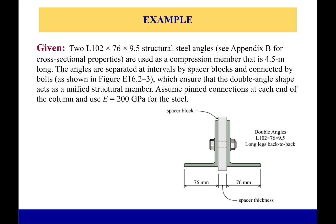Okay, let's try another example. This one is a little bit harder to visualize, so I'll read it and then we'll talk about it. I've got two L102 × 76 × 9.5 structural steel angles, shown in the picture right here, and they're used as a compression member that is 4.5 meters long.